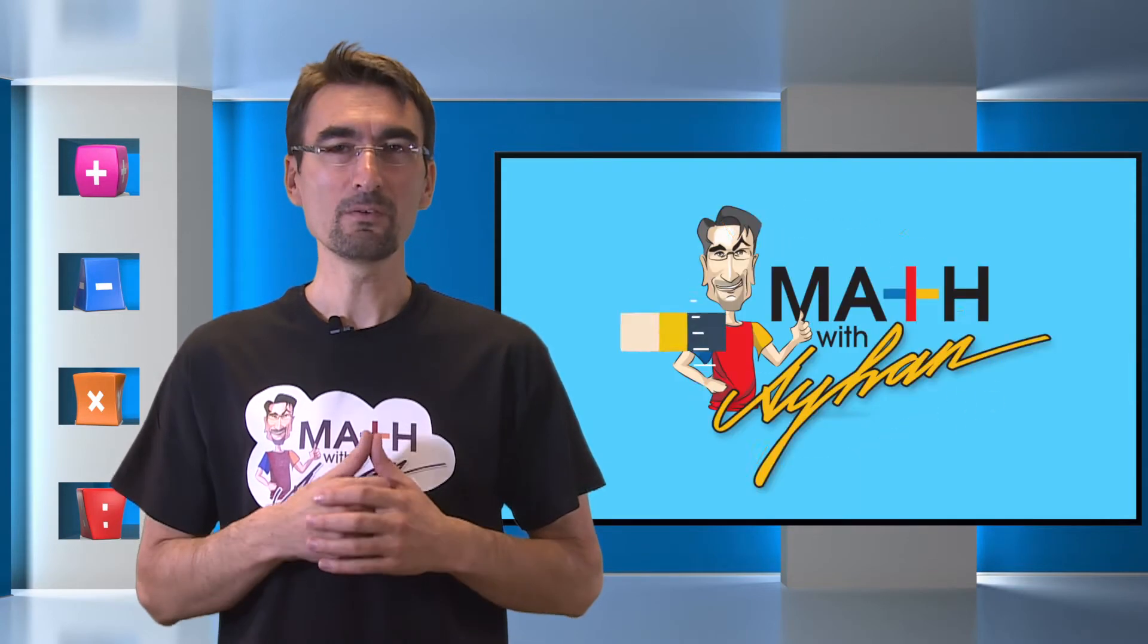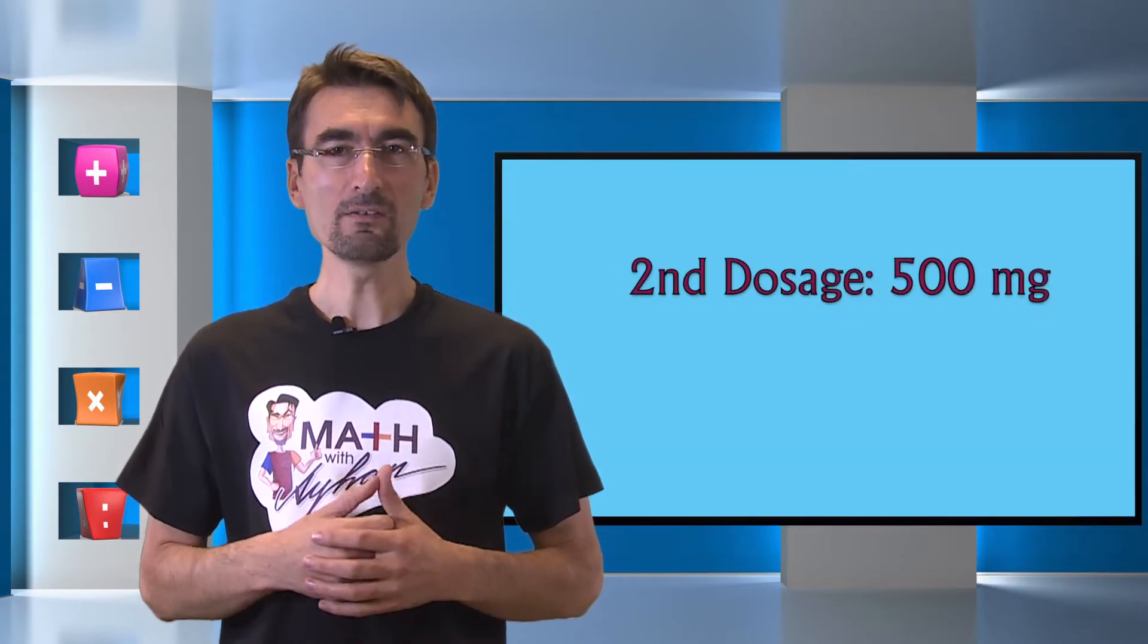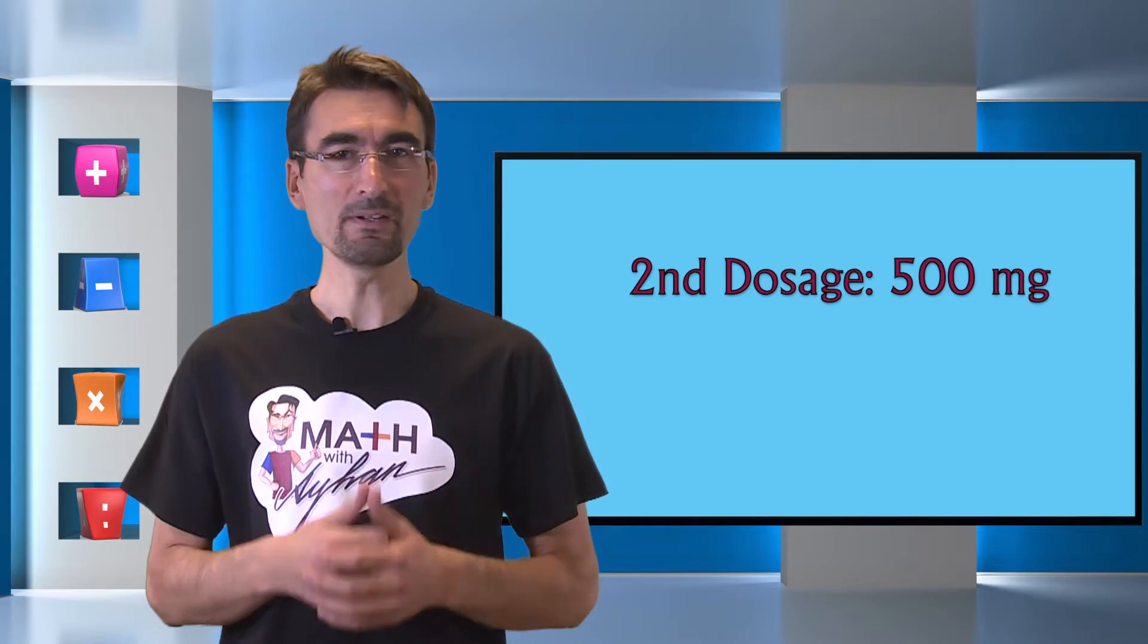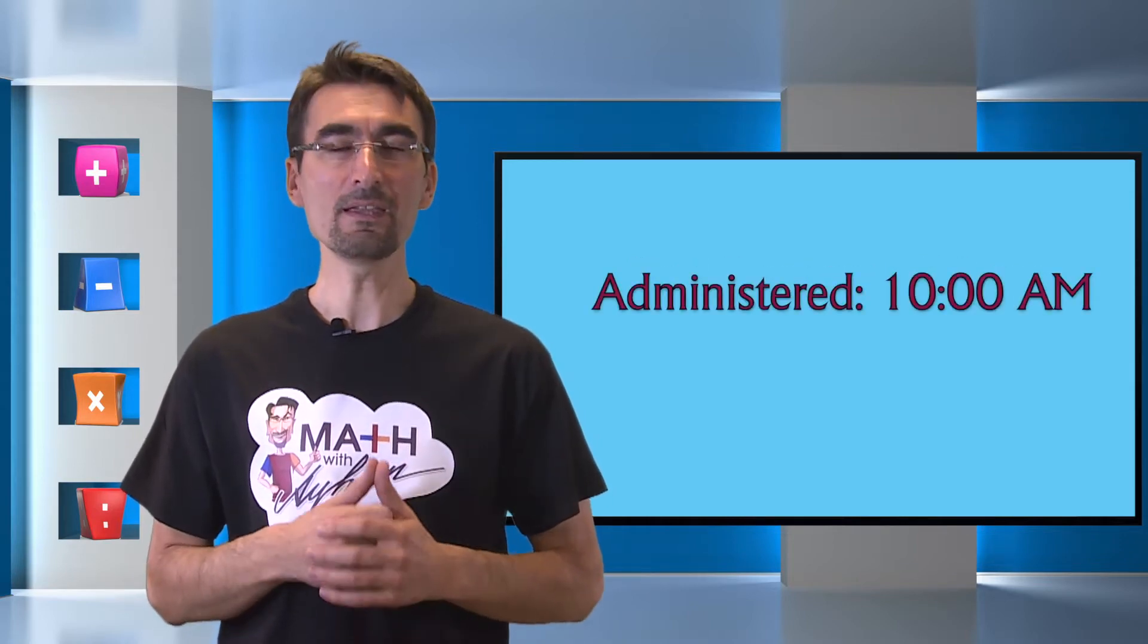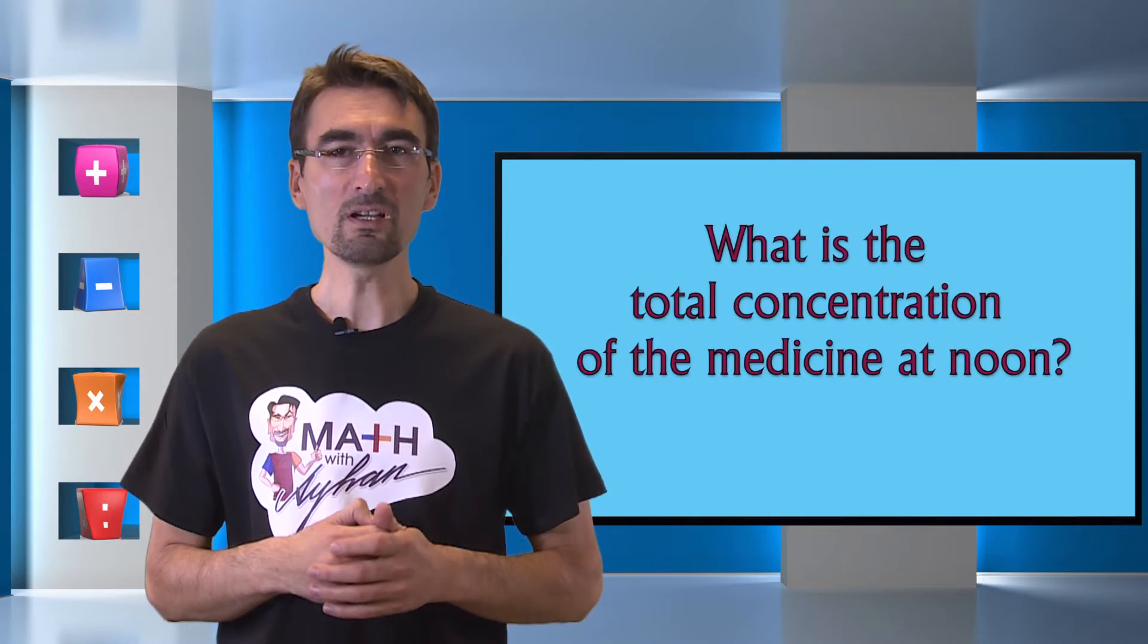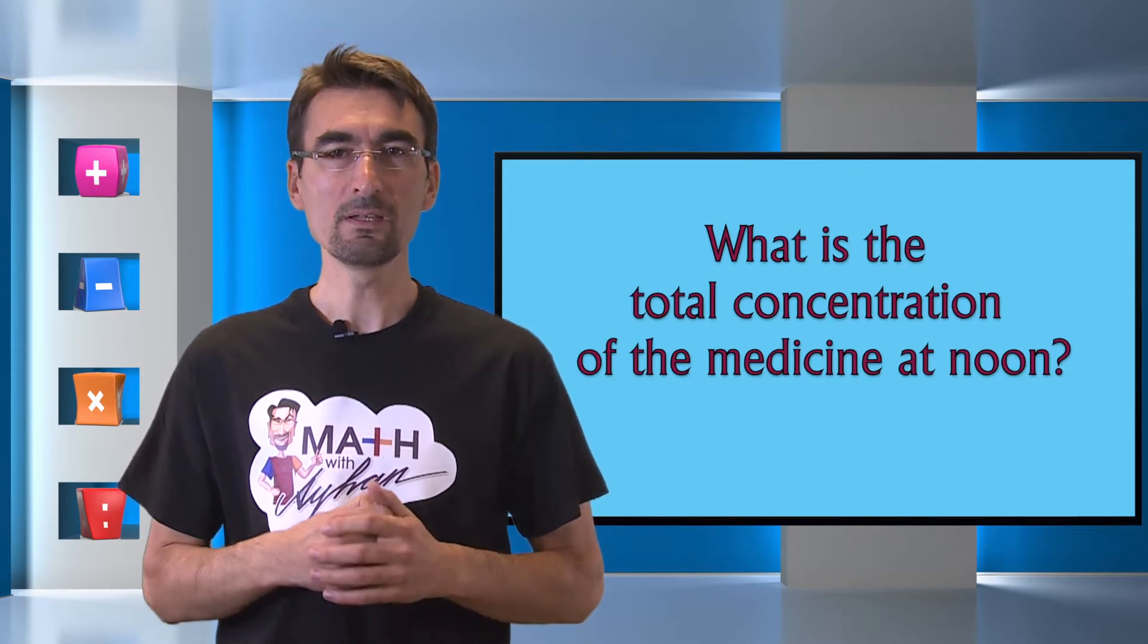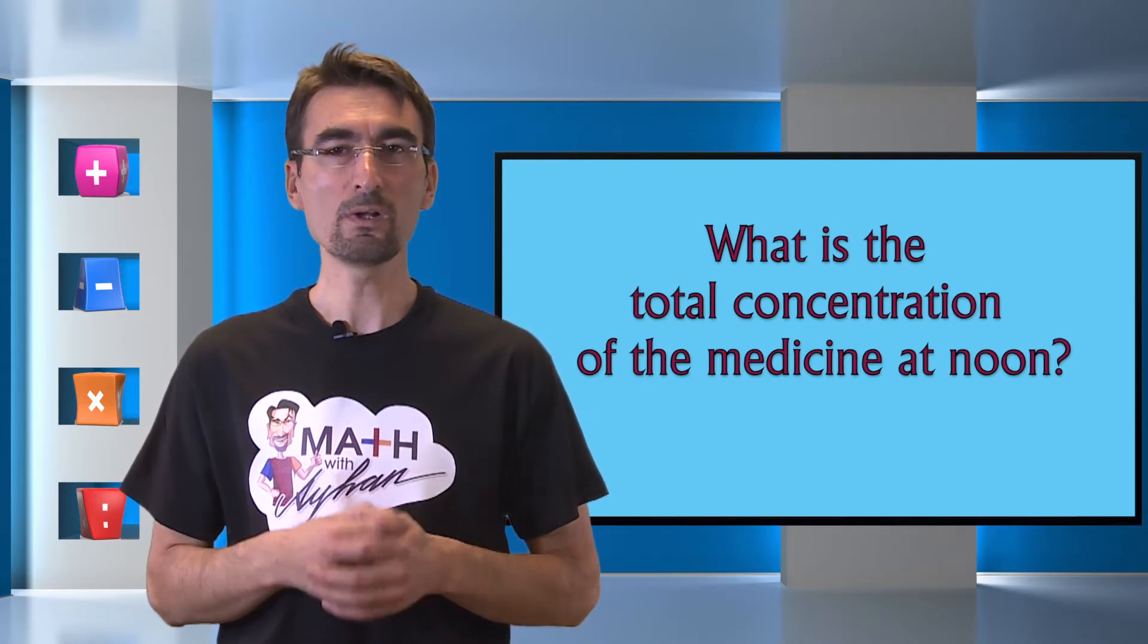Here comes the second part of the question. A second dosage of 500 mg is given at 10 a.m. What is the total concentration of the medicine in the patient's body at 12 noon?